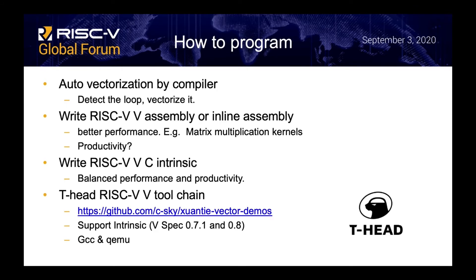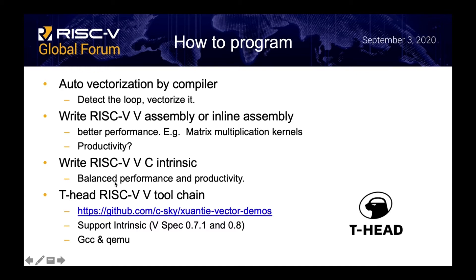How to program RISC-V vector extensions? There are three methods. The first is to use the compiler auto-vectorization. The second is to write RISC-V assembly or inline assembly — it can achieve better performance, for example writing matrix multiplication assembly kernels, but this has low productivity. The last one is to write RISC-V intrinsics in C language, which is balanced in performance and productivity.